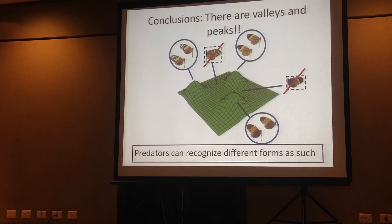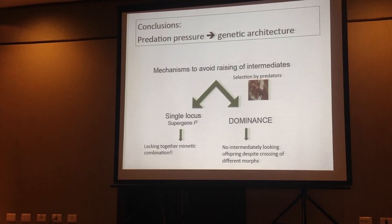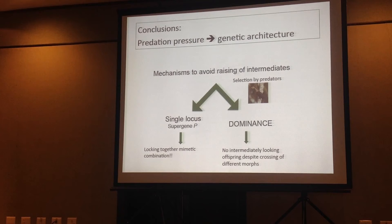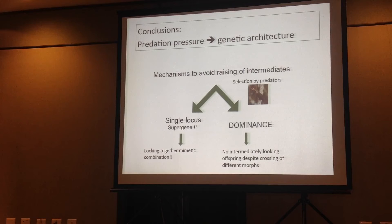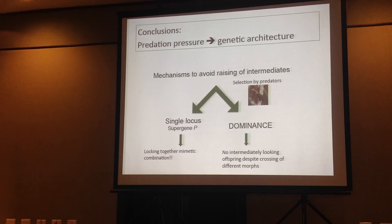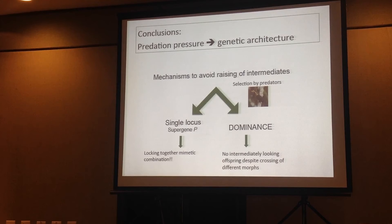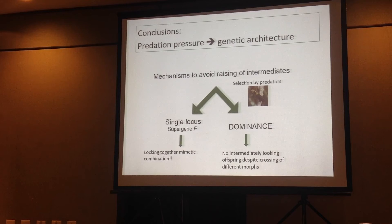So it's true that there are valleys, it's true that predators can perceive the different morphs as such, and it's true that there are fitness peaks. This is quite interesting because there is a very nice genetic architecture controlling the color pattern in Heliconius butterflies. Especially in Heliconius numata, the color pattern is controlled by a single locus that locks together the mimetic combination. On top of that, there is genetic dominance acting at the local range, really preventing intermediate-looking offspring, despite it being easy to find morphs that are different and can cross because they are the same species. We can really see how selection is triggering the evolution of this specific genetic architecture.